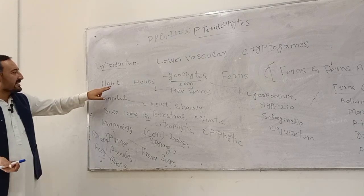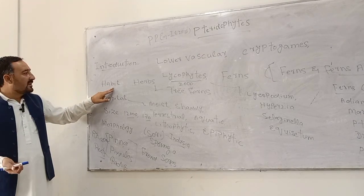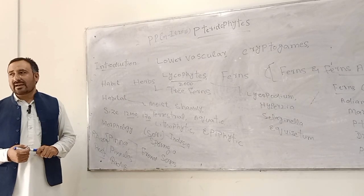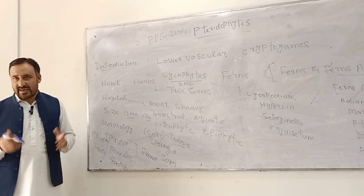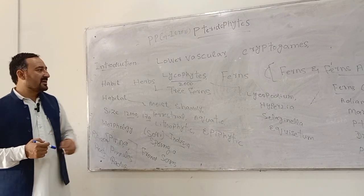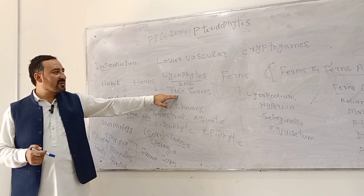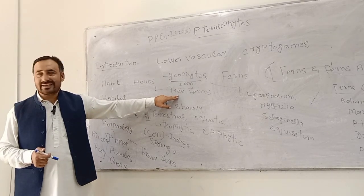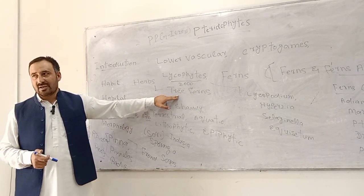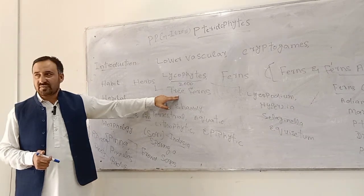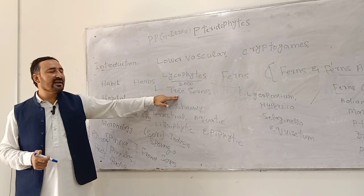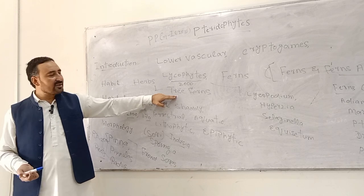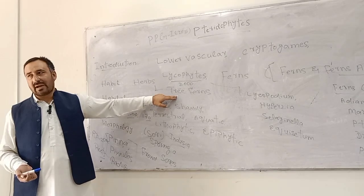Regarding habit, mostly all the pteridophytes are herbs, except a few species which are tree ferns. For example, Scythia and Dicksonia are tree ferns. They are found in North America, South America, and even in India, but not found in Pakistan.